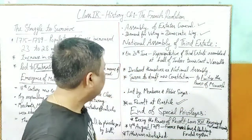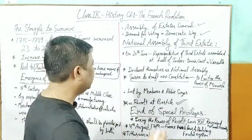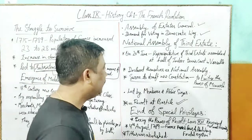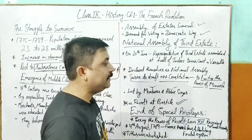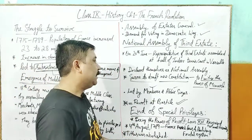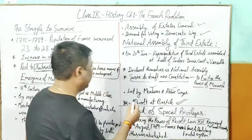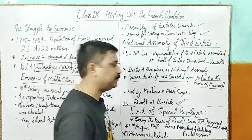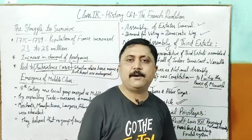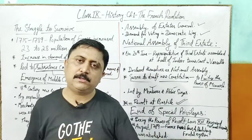Abhi tak woh hereditary ruler tha, king tha, monarch tha - uske paas supreme powers the, woh kuch bhi kisi ko order kar sakta tha, koi bhi ordinance issue kar sakta tha. He was not actually answerable to the people. But now they thought they will draft a constitution that will limit the power of the monarch. This National Assembly of the Third Estate was led by Mirabeau and Abbé Sieyès. Inko ek jagah ektha karne mein aur aage badhane mein inका bahut bada role tha.